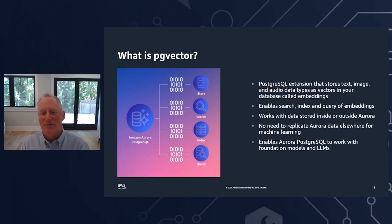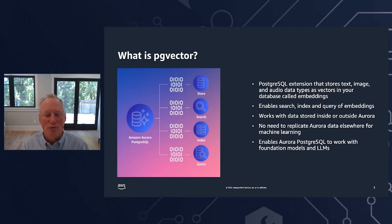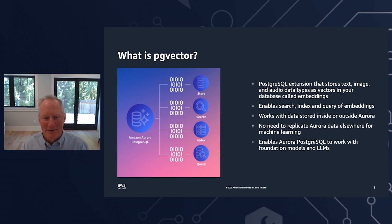PG Vector is a PostgreSQL extension for storing vectors and performing vector similarity search. Machine learning and foundation models represent text and images as mathematical vectors that a machine can search through and compare. These vectors are referred to as embeddings. Comparing embeddings is absolutely key in deploying machine learning for uses like similarity search of images or text. PG Vector enables Aurora to store your embeddings and do comparisons using SQL on data in Aurora already, or on data stored in other locations such as S3, maintaining all security and control that you're used to.